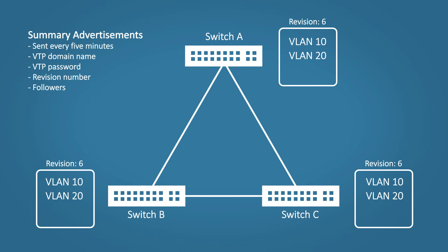The summary advertisement also includes the followers field, which indicates whether another message will follow — used when updating the database. These messages don't include the VLAN information itself; if there are no changes to the VLANs it makes no sense to keep sending the same database information every five minutes — that's just a waste of bandwidth. These messages just contain the VTP settings and the revision number, so each switch sends out its own summary advertisement and compares revision numbers. If a switch receives a summary advertisement with a revision number the same or less than its own, it simply ignores the message. If we add a new VLAN to Switch A, the revision number increases by one.